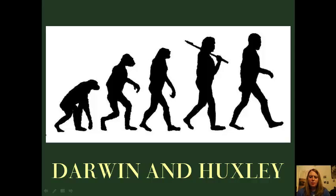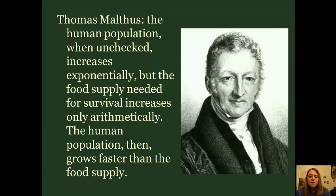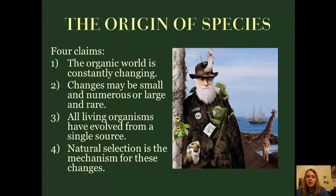I just want to summarize a couple of the main points of Darwin and Huxley, the text that you have to read for this section. The key element of Darwin's text is that Darwin and Wallace both had read Thomas Malthus, who published this theory that says the human population, if there's nothing to keep it in check, will rise faster than the food supply, inevitably leading to too many mouths to feed. So there has to be some mechanism that keeps the population from outgrowing the food supply, and that mechanism Darwin figures out is natural selection.